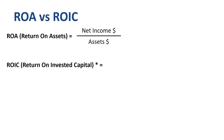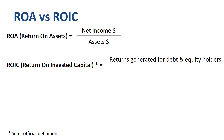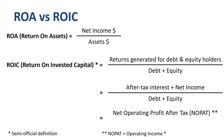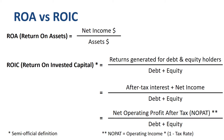What is the definition of ROIC, and how does it differ from ROA? The reason why I call this semi-official will become clear when we go through examples of real-life companies disclosing their ROIC calculation later in this video. In the numerator of the ROIC calculation are the returns generated for debt and equity holders. In the denominator is debt plus equity. More specifically, the returns generated for debt and equity holders are usually defined as after-tax interest plus net income. Another description for the same thing is net operating profit after tax (NOPAT). With after-tax interest plus net income, you start at the bottom of the income statement and work your way up. With net operating profit after tax, you start a little higher in the income statement and work your way down.